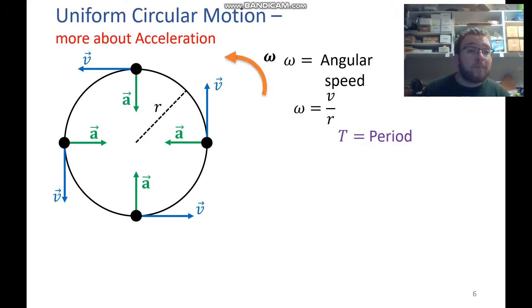And we also have something that we call the period, which we represent with a capital T. That's the amount of time it takes to make one full rotation. We call that a period.